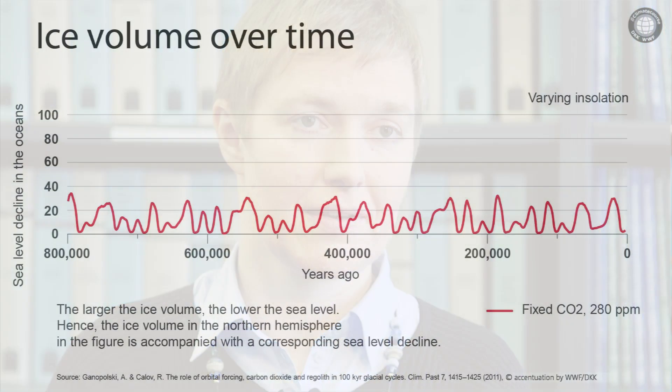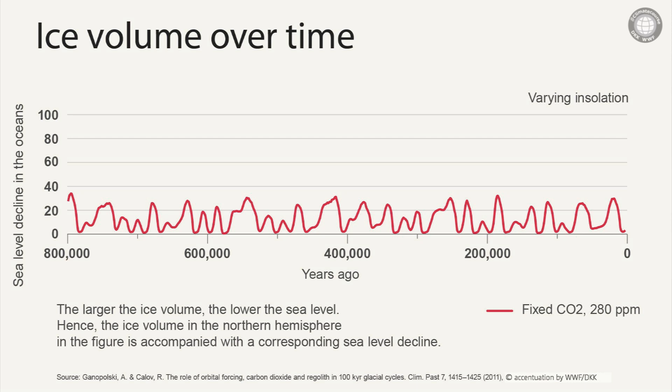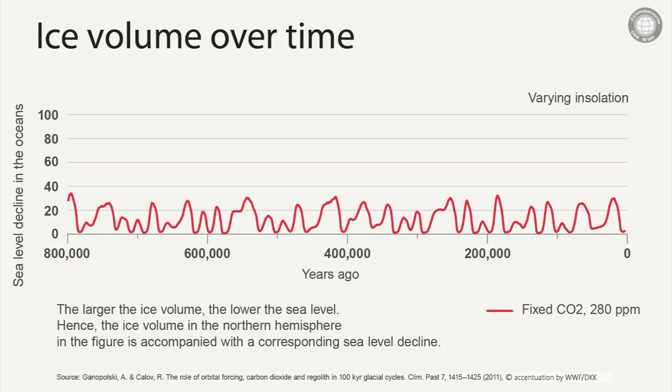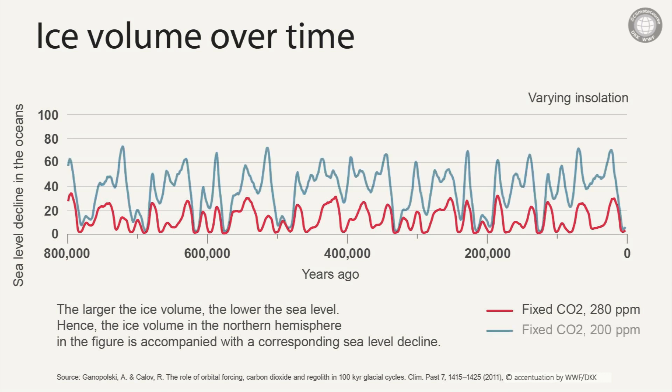What happens when you turn individual factors on and off in the model? In a first experiment, the solar radiation was allowed to vary to take into account the variations in the Earth's orbit, while the concentration of CO2 in the atmosphere was set to a fixed value of 280 ppm. As you can see in this graphic, the model simulates the evolution in time of the ice volume in the northern hemisphere. The fluctuations of the ice volume between glacial and interglacial periods are significantly lower than those obtained from reconstructions, which indicate changes corresponding to sea level changes of more than 100 m. The simulated fluctuations are irregular and clearly too small in amplitude.